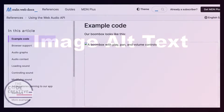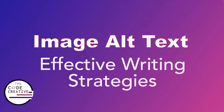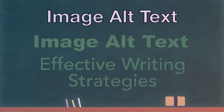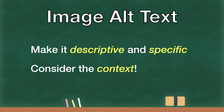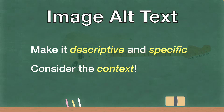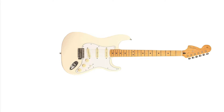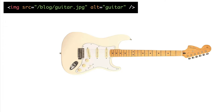Now that we understand the role and importance of alt text, let's learn some strategies for writing it effectively. First of all, we want our image alt text to be descriptive and specific. We also want to take into consideration the context in which our image exists. Taking this image of a guitar as an example, we could simply use the word 'guitar,' but in general this alt text feels a little too generic. As a rule of thumb, we want to avoid single-word alt text.